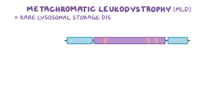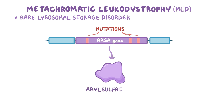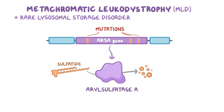Metachromatic leukodystrophy, or MLD, is a rare lysosomal storage disorder that results from mutations in the ARSA gene, which codes for arylsulfatase A, an enzyme that normally breaks down a fat called sulfatide.